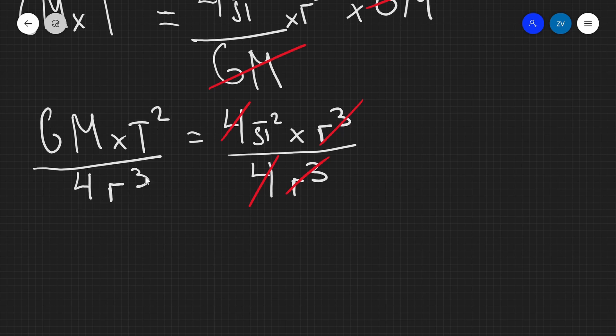Our next and final step would just be to take the square root of this, and what I'm left with is that π is equal to the square root of GMT² divided by 4r³.